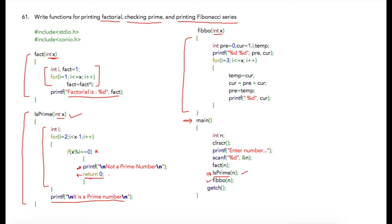The controller returns from the is_prime function using 'return' rather than 'exit', because if we use exit the program terminates immediately and subsequent lines in main would not get executed. When 'return' is used, once is_prime returns, the next statement in main continues to execute. In the third call, the Fibonacci function is called and it performs the statements to print the Fibonacci series. In the main program, I accept a number from the user, store it at 'n', and call all three functions passing the value of 'n'.